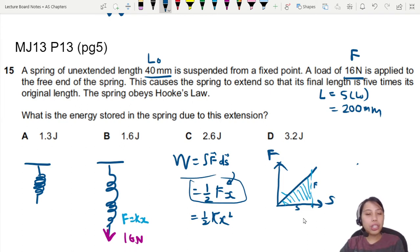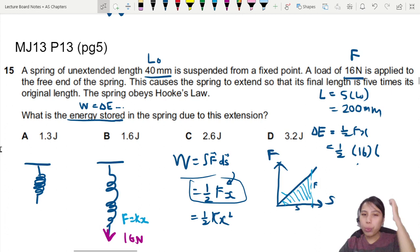So work done or rather the change in energy, elastic potential energy. Work done or change in energy is going to be half Fx. So half times 16 newtons that stretch the spring in the first place. And then the extension. We go from 40 until 200. So extension is your final length minus your original length.